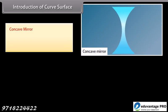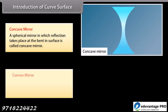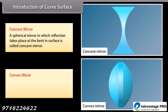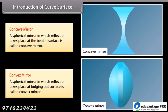A spherical mirror in which reflection takes place at the bent-in surface is called a concave mirror. A spherical mirror in which reflection takes place at the bulging-out surface is called a convex mirror.